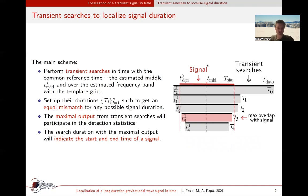We set up the search durations to get equal mismatch in the frequency and the time for any transient signal. The transient searches have a common reference time equal to the estimated middle time of a candidate. The best statistical result is expected from the maximum overlap between a transient search and the actual signal duration.